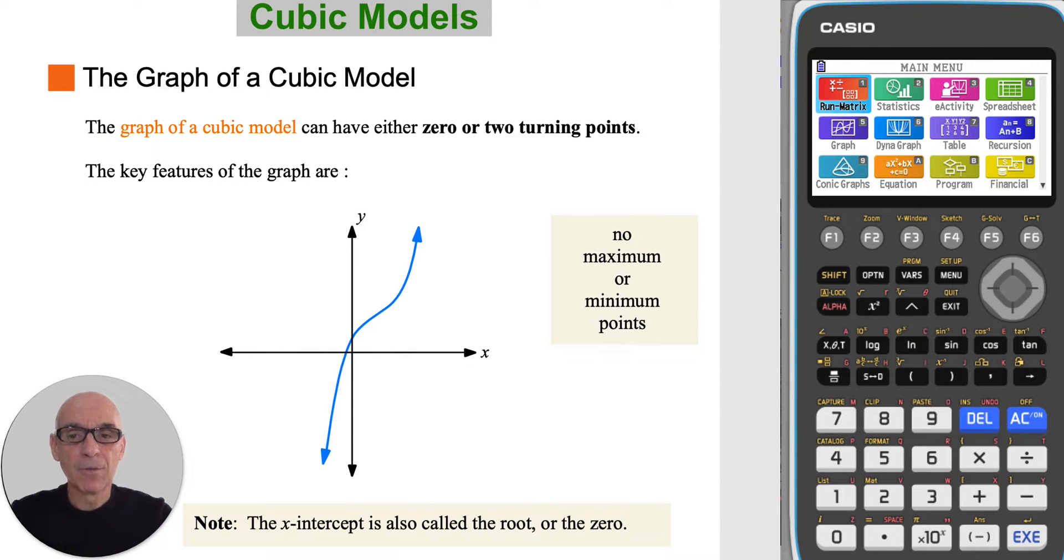The graph of a cubic model can have either zero or two turning points, and the key features of the graph are its y-intercept, its x-intercept or intercepts, its inflection point, and its maximum or minimum points.